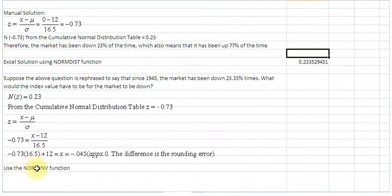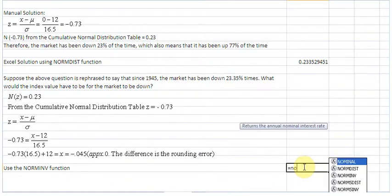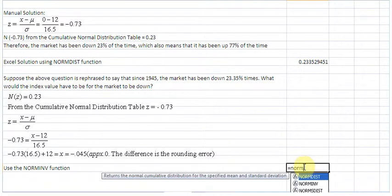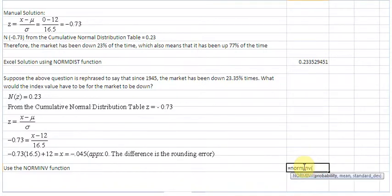In Excel, we can use the NORMINV function to accomplish the task. Let us do that in this cell. So we write an equality sign, type in NORM, N-O-R-M-I-N-V, NORMINV. Start a bracket, and then Excel is asking us to enter the parameters. The first one is the probability. We already know the probability. 23.35%. So we write 0.2335.